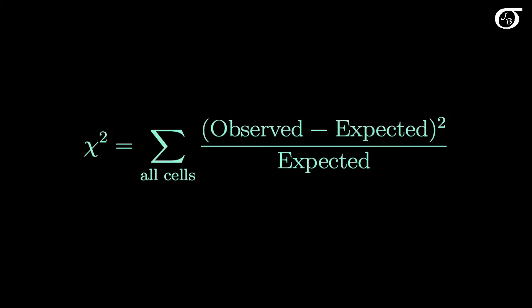Here's our chi-square test statistic, where for each cell we take our observed count in that cell, what we saw in the sample in other words, we subtract the expected count, what we'd expect to see on average if the null hypothesis were true, square it, divide it by the expected count, and add that up over all cells.